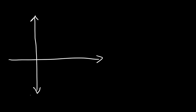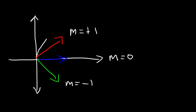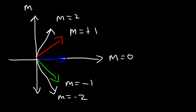Sometimes it might be helpful to visualize slope. A horizontal line has a slope of 0. If a line increases at a 45-degree angle, the slope is positive 1. If it decreases at a 45-degree angle below the x-axis, the slope is negative 1. A slope of 2 is steeper, and a slope of negative 2 decreases more steeply. As the line becomes more vertical, the slope increases, and for a vertical line the slope is undefined.